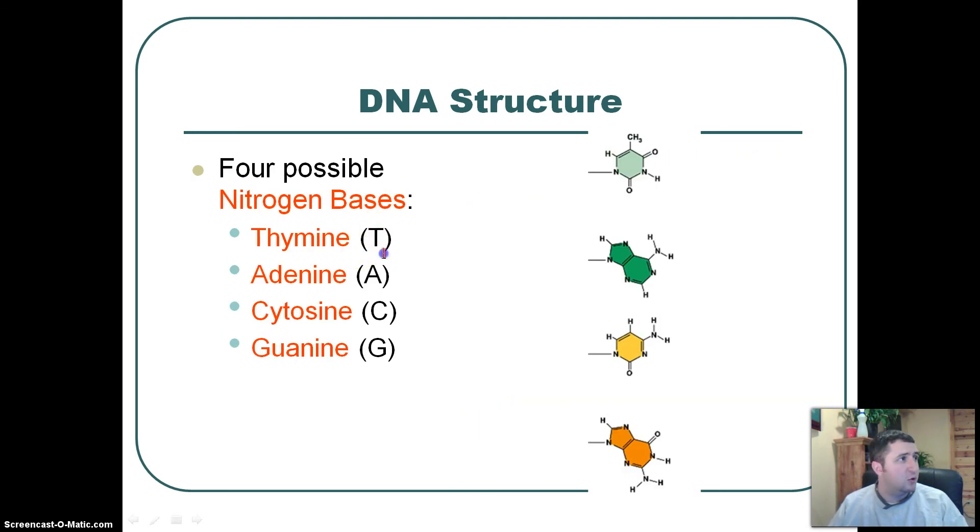So DNA, again, has four possible structures, and that's T, A, C, or G. The T stands for thymine, the A stands for adenine, the C stands for cytosine, and the G stands for guanine.